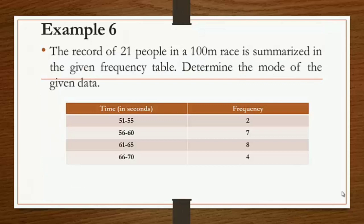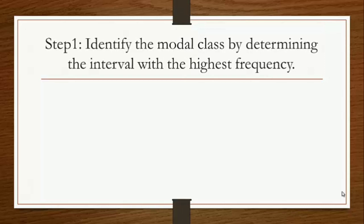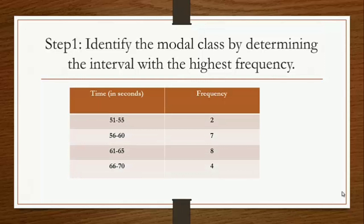Now let us solve for the mode of grouped data. The record of 21 people in a 100-meter race is summarized in the given frequency table. Determine the mode of the given data. We are given time in seconds and frequency. Step 1: identify the modal class by determining the interval with the highest frequency. The modal class is 61 to 65, since it has a frequency of 8 — the highest among all classes.